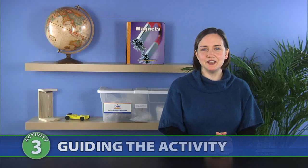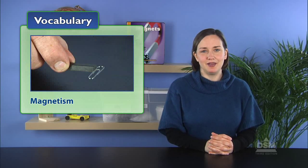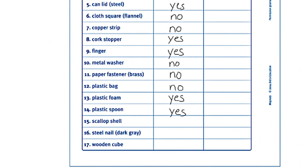To begin the activity, divide the class into teams of four and distribute Activity Sheet 2. Explain that they will experiment with different objects to see if they can block the force of a magnet to attract objects. This force is called magnetism. In the first column of the Activity Sheet, have students record their guesses regarding which objects will block the force and which will not.